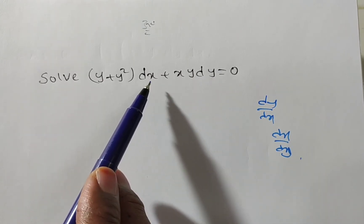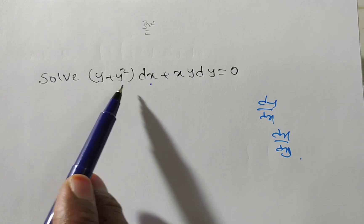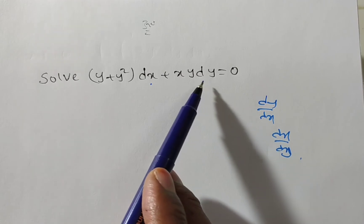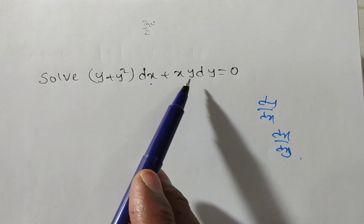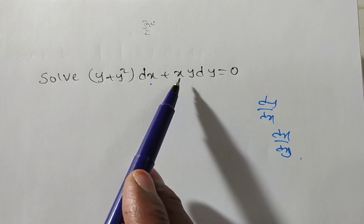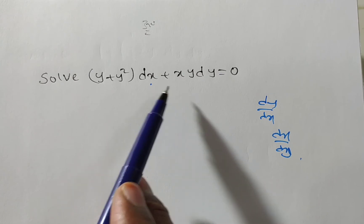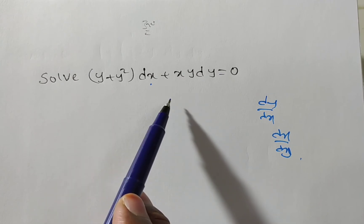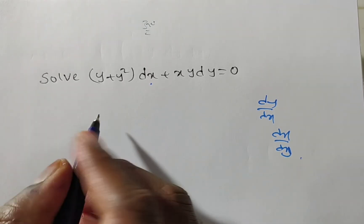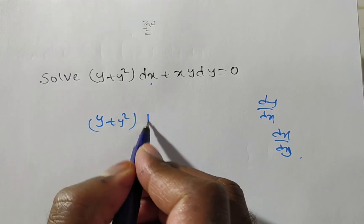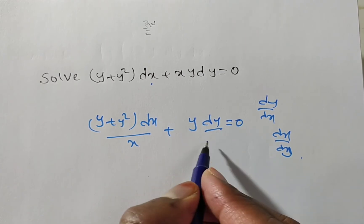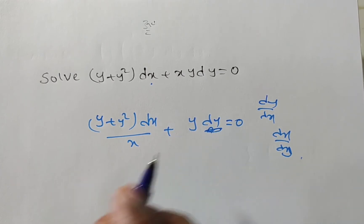Here you see, the dx term is there, but the coefficient has a y term — so take that y term to the right side. Also, the dy coefficient is xy: the y can stay, but the x must be taken to the left side. If this separation is possible, then only can we apply the variables separable method. So I am taking this x to the left side.